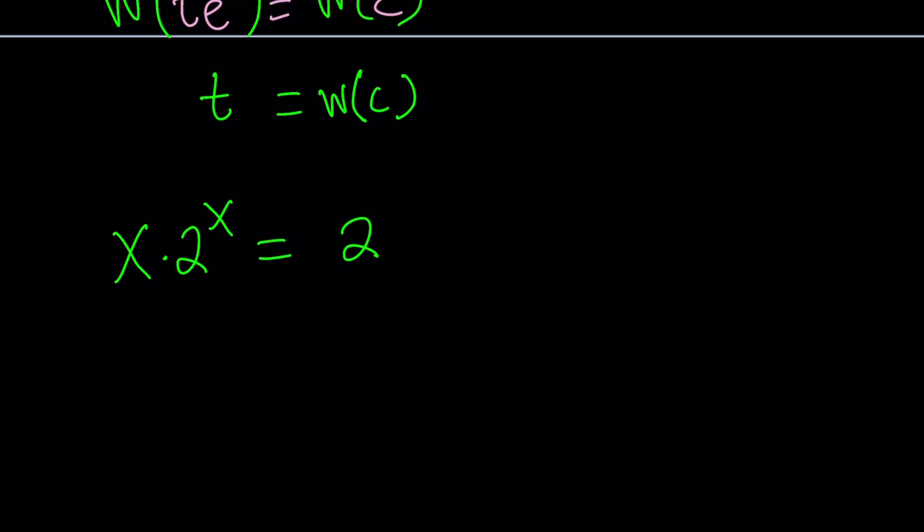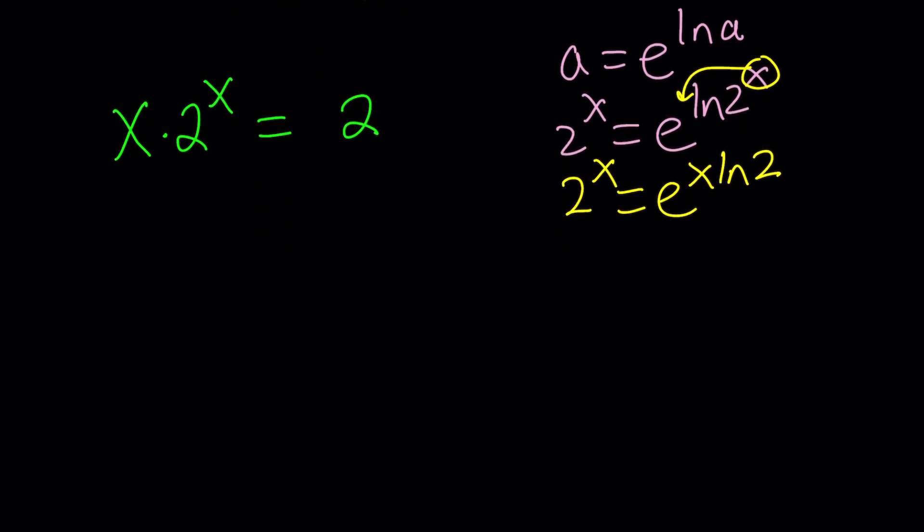And we could use an identity. Obviously, you can basically write something like a as e to the power ln a. And then, of course, 2 to the power x can be written as e to the power ln 2 to the power x. But this x can be moved, and we can basically write this as e to the power x ln 2. So 2 to the power x can be written as e to the power x ln 2. And you can generalize this if you want to write it as a to the power x. That can be written as e to the power x ln a. So a to the x and e to the x are kind of related. In other words, a to the x is a power of e to the x. So the correcting factor in this case is going to be ln a.